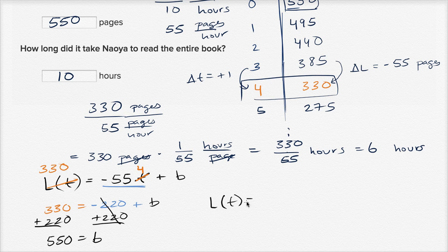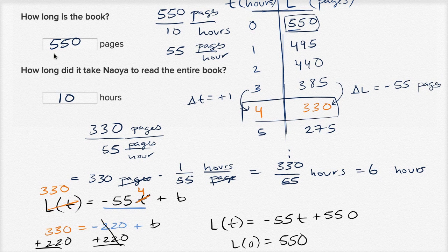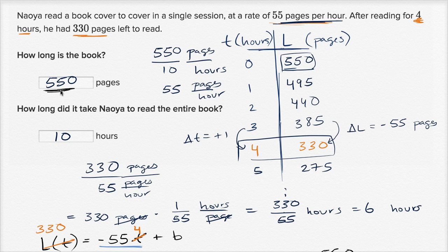So the function describing how much he has left to read is L(t) = -55t + 550. If someone asks how long the book is, that's L(0) — the pages left to read at time zero — and L(0) = 550. Then to find the total reading time: 550 pages divided by 55 pages per hour gives 10 hours.